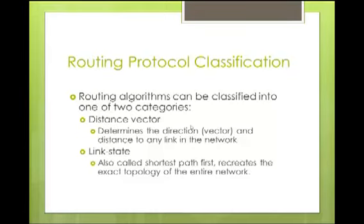With distance vector, it's kind of like driving towards a destination. We look at the road signs, and if the mileage is getting lower, that means we're going in the correct direction. If the mileage started getting higher, then we would know we're going in the wrong direction. Link state actually creates an entire map of the network, and from that map they can choose the correct path to take.